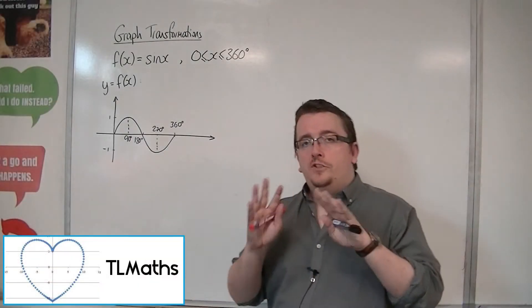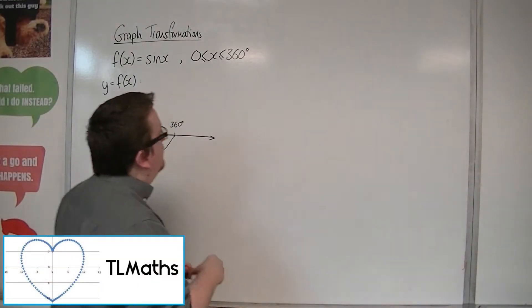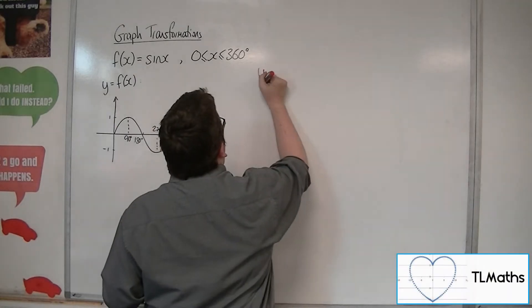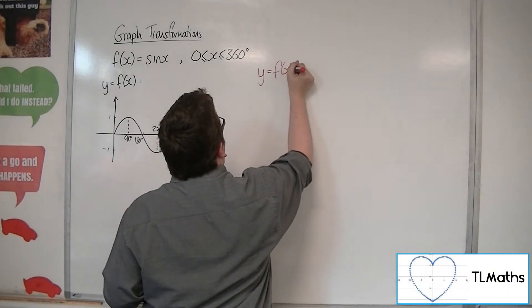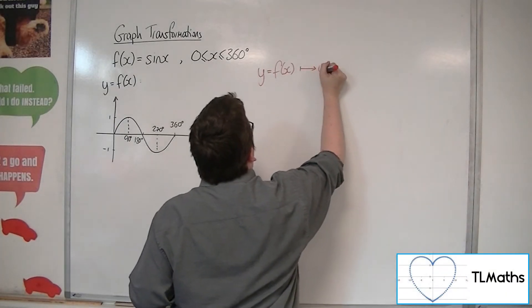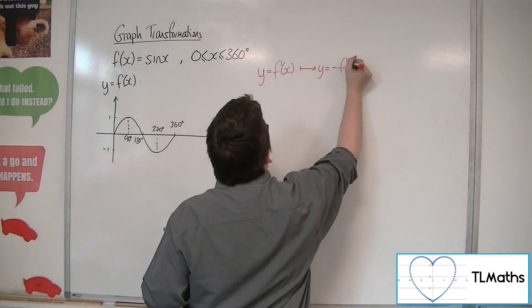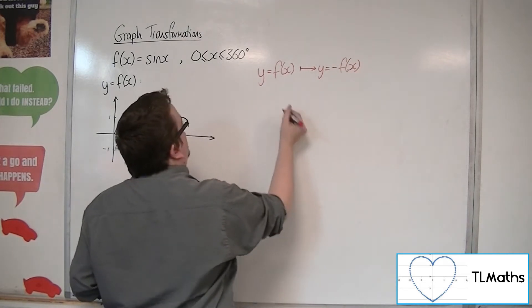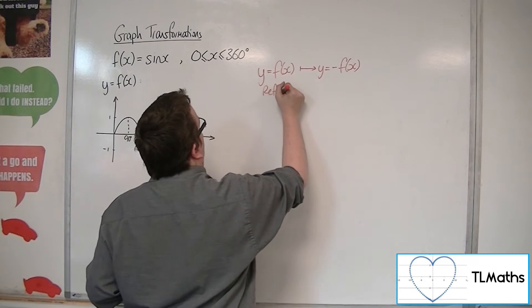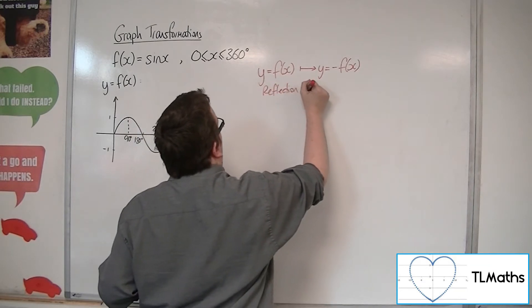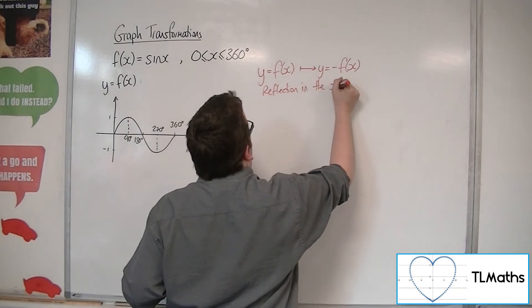OK, so let's have an overview of the two types of reflections we've looked at. When we had y equals f of x being transformed to y equals minus f of x,